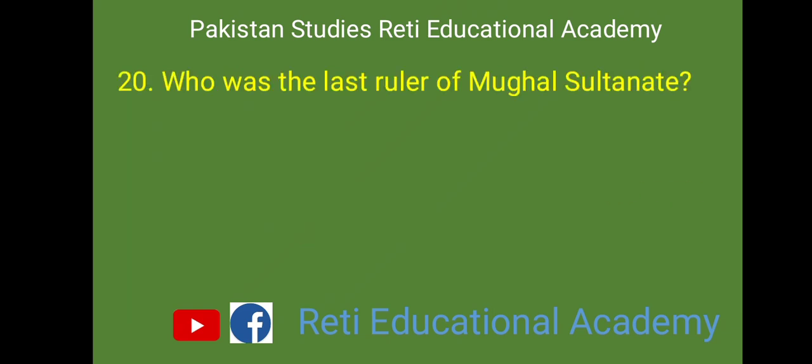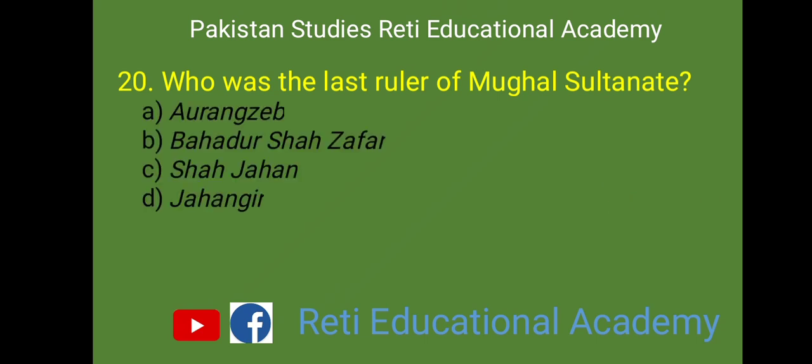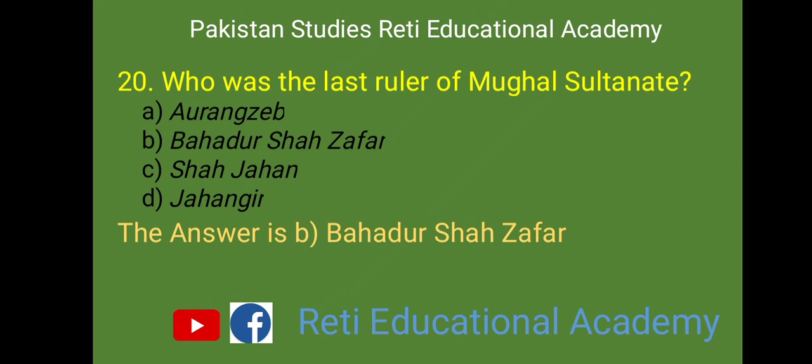MCQ number 20: Who was the last ruler of the Mughal Sultanate? A. Aurangzeb, B. Bahadur Shah Zafar, C. Shah Jahan, D. Jahangir. And the right answer is B. Bahadur Shah Zafar.